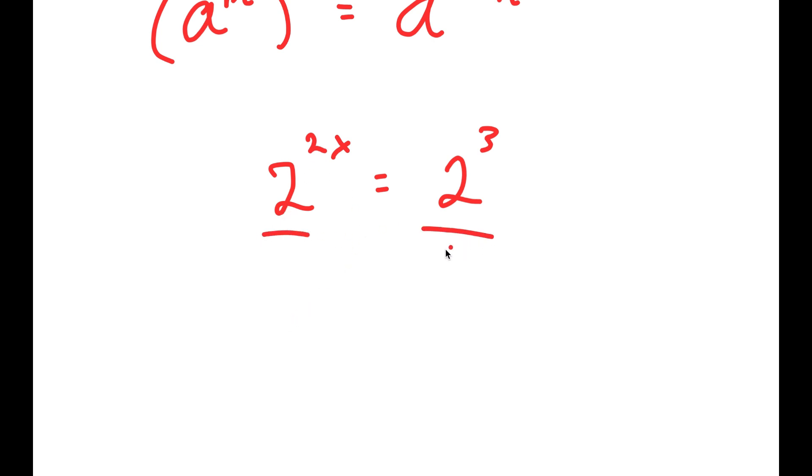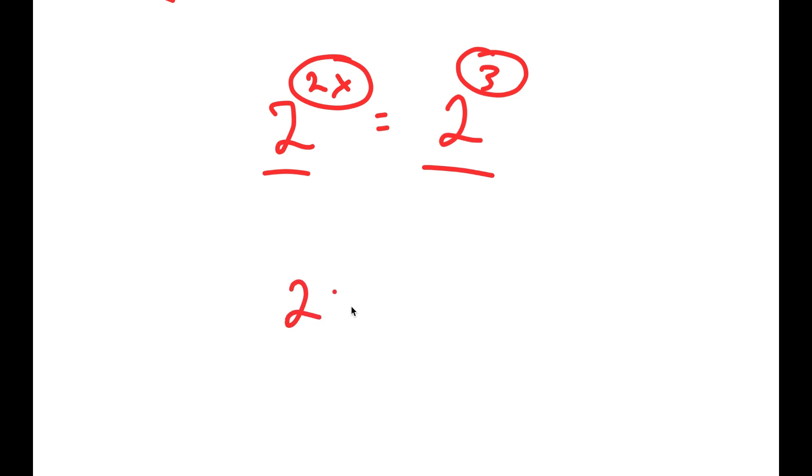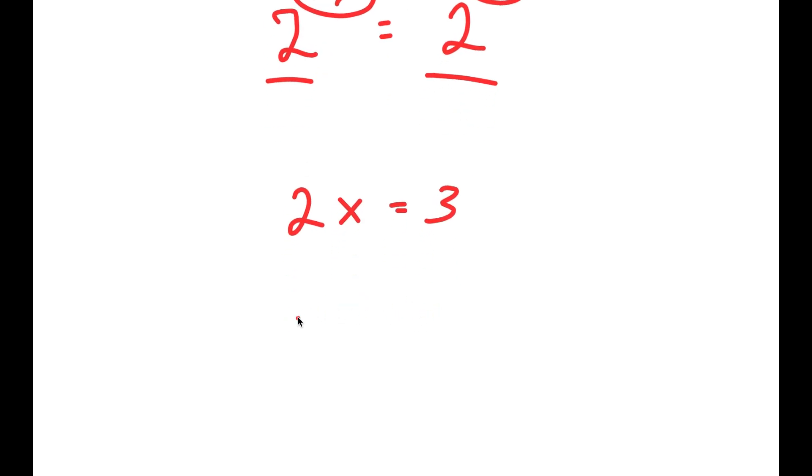And because these two have the same bases, these exponents are equal to each other. So 2x is equal to 3, and x is equal to 3 over 2.